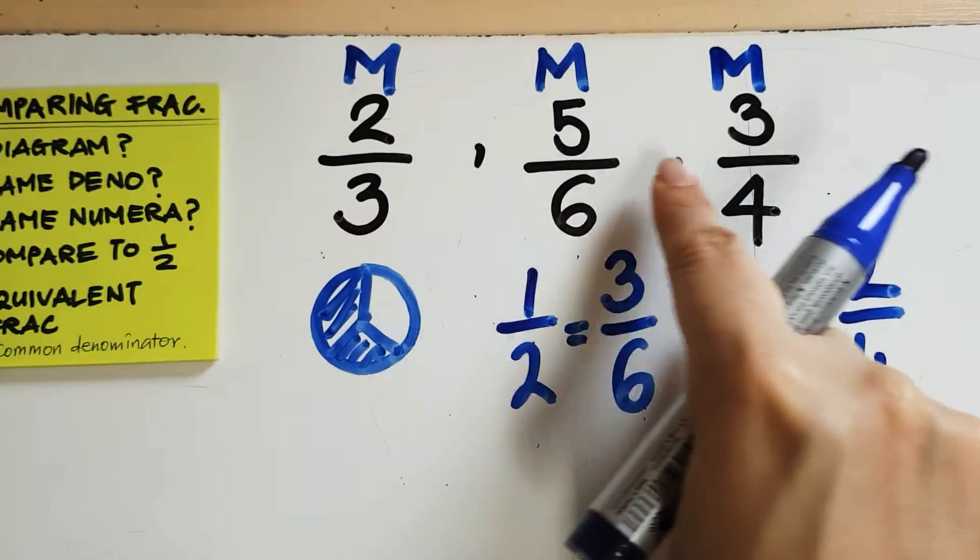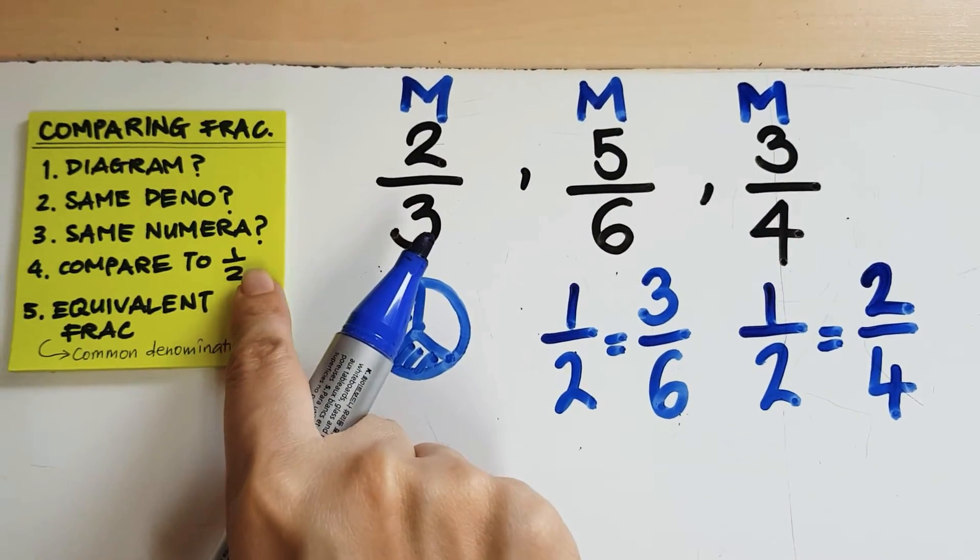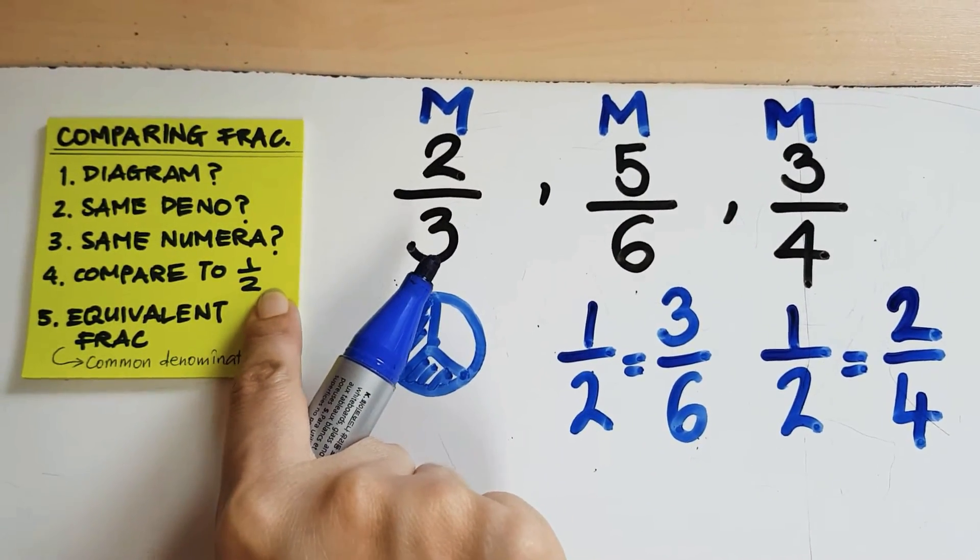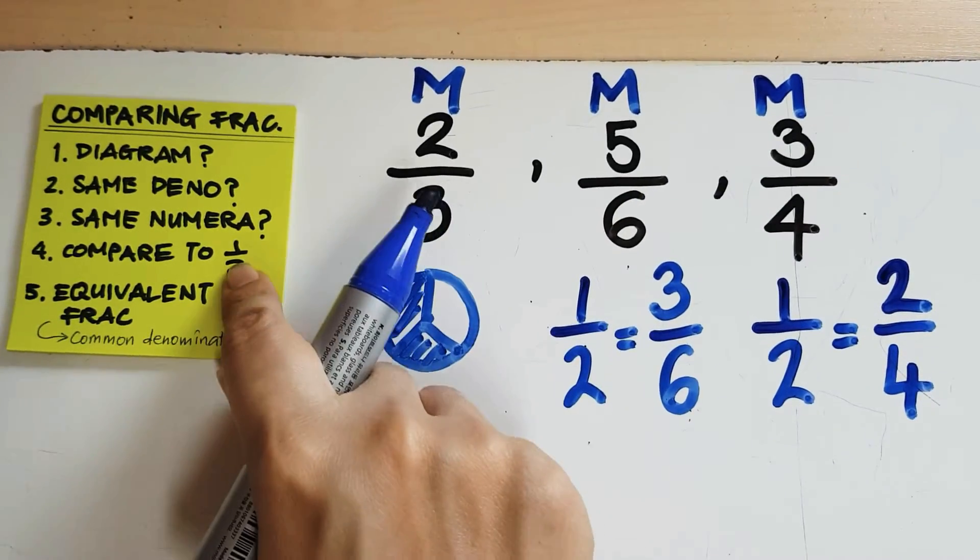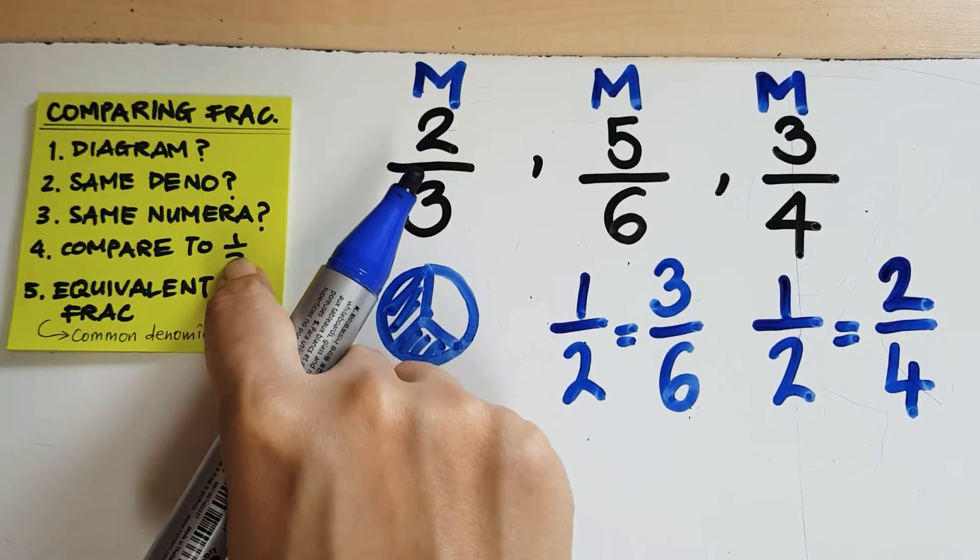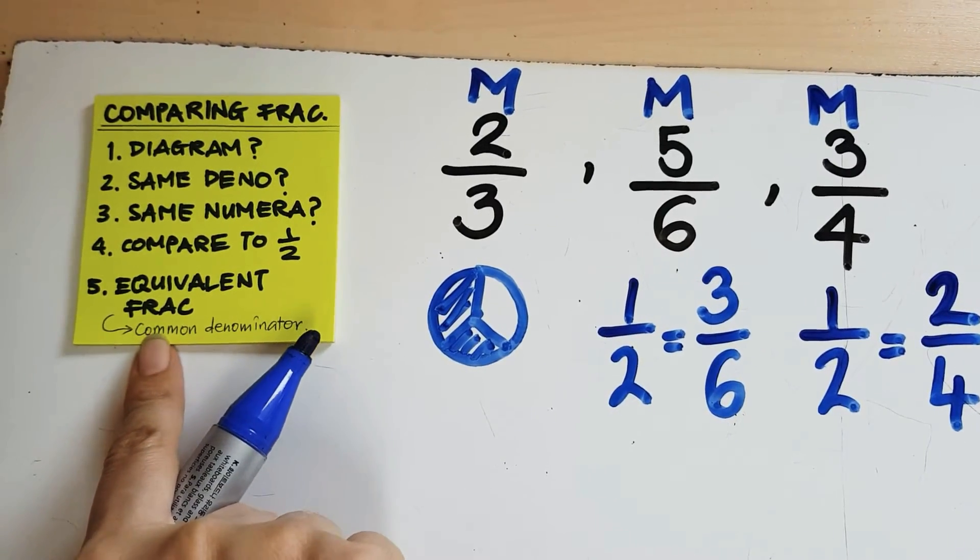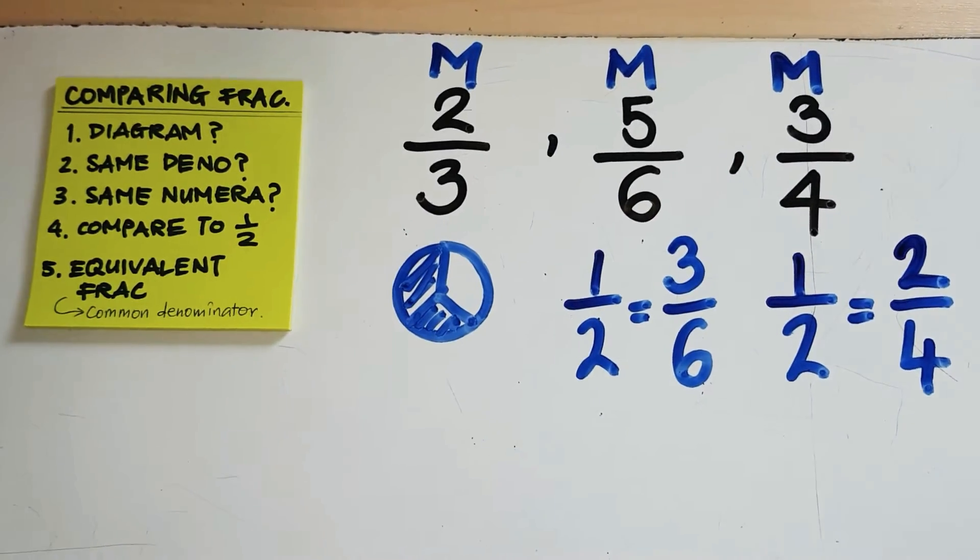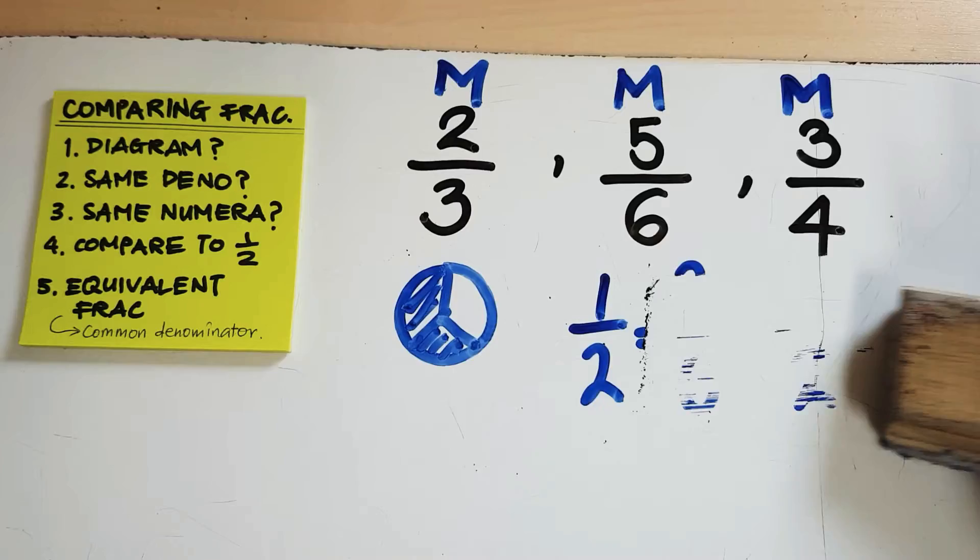Now, all these are more than half, so when I compare to half, I cannot conclude which one is bigger or which one is smaller. So, actually, this method fails in this case. And so, we go on to the last method, which is to use equivalent fractions. So, let me erase this off.